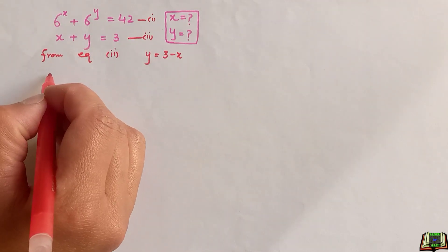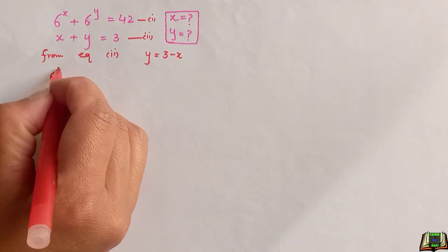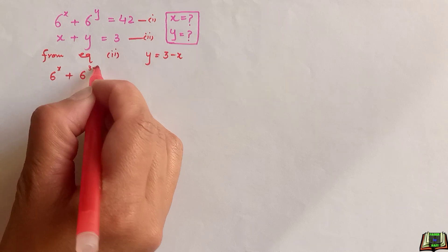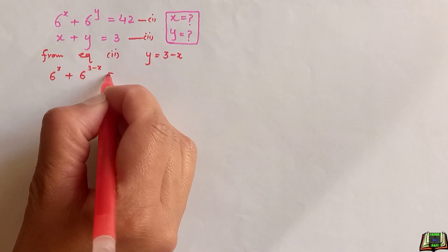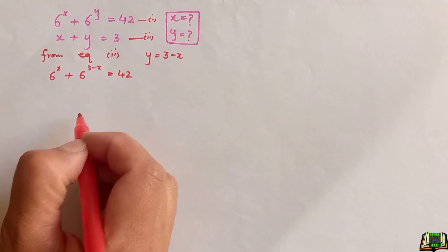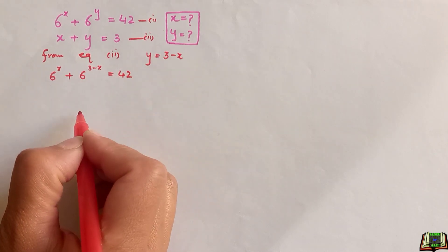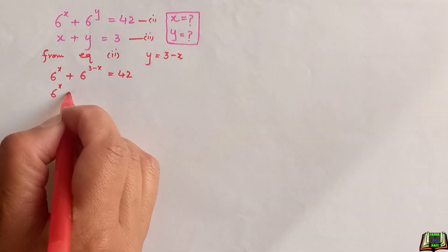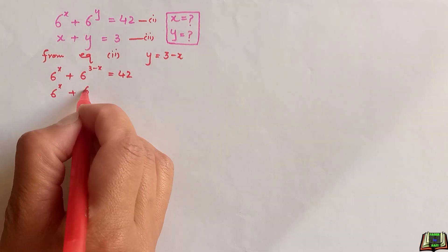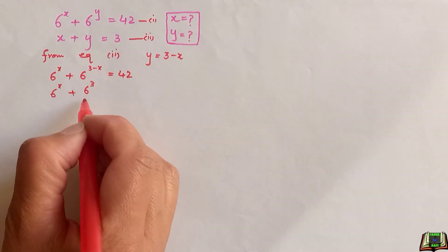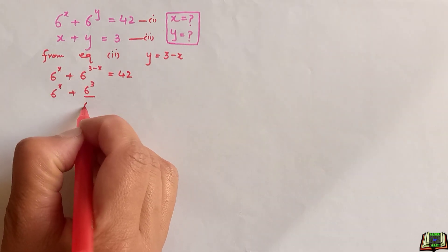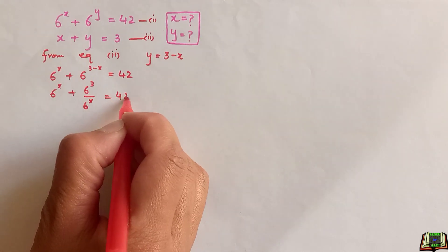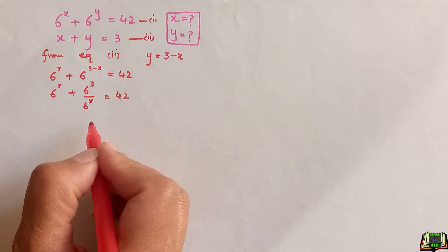So this will become: 6 to the power x plus 6 to the power (3 minus x) is equal to 42. We can write this as 6 to the power x plus 6 to the power 3 divided by 6 to the power x, to make the power positive, is equal to 42.